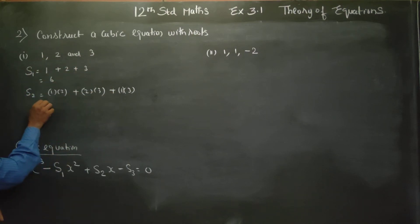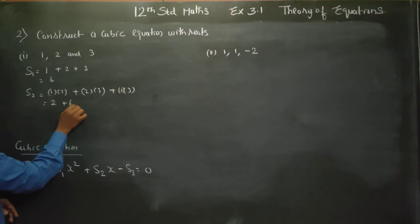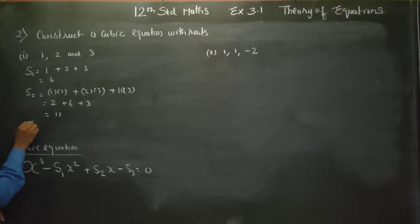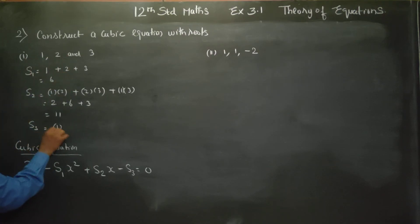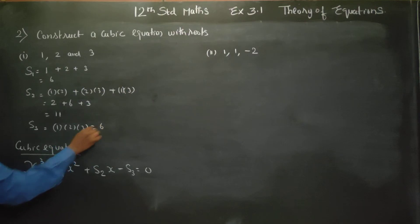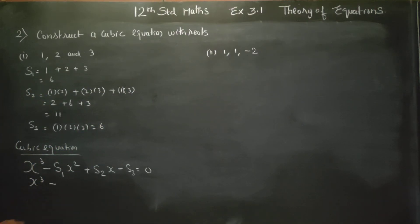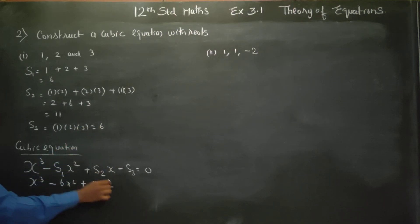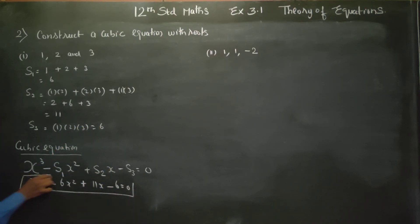s2 = (1×2) + (2×3) + (1×3) = 2 + 6 + 3 = 11. s3 is all three roots at a time: 1 into 2 into 3, answer is 6. So the cubic equation is: x cube minus 6 x square plus 11 x minus 6 is equal to 0. This is your cubic equation.